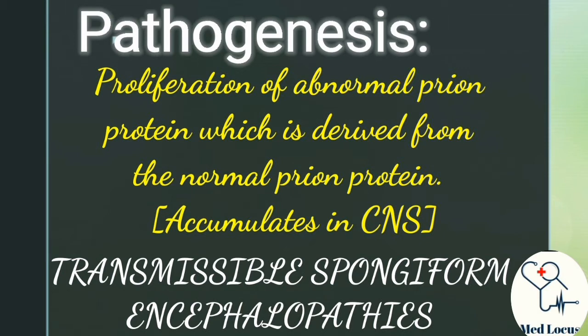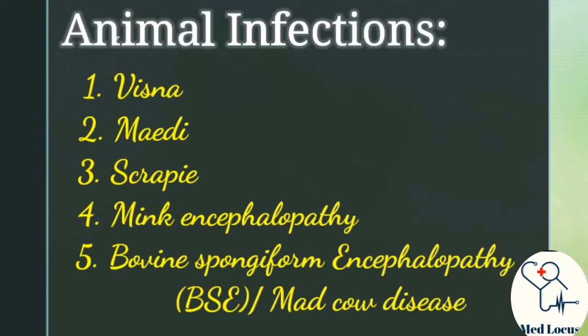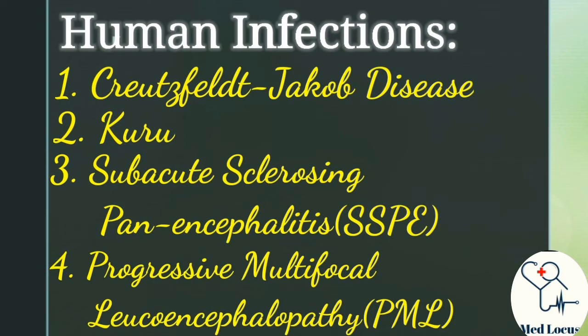In humans, the diseases are named as transmissible spongiform encephalopathies. Animal infections include bisna, medhi, scrapie, mink encephalopathy, and bovine spongiform encephalopathy, also known as mad cow disease. Human infections include Creutzfeldt-Jakob disease, kuru, sub-acute sclerosing panencephalitis, and progressive multifocal leucoencephalopathy.